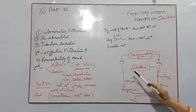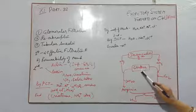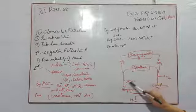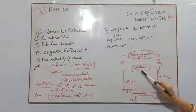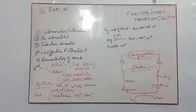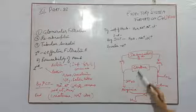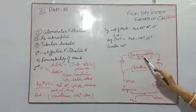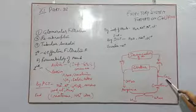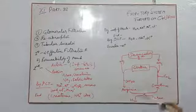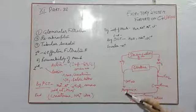This ammonia reacts with citrulline — a compound present in our body — and releases water, forming arginine. So when deamination of protein takes place, ammonia is formed. Then ammonia reacts with carbon dioxide to form citrulline, and citrulline is then converted to arginine.